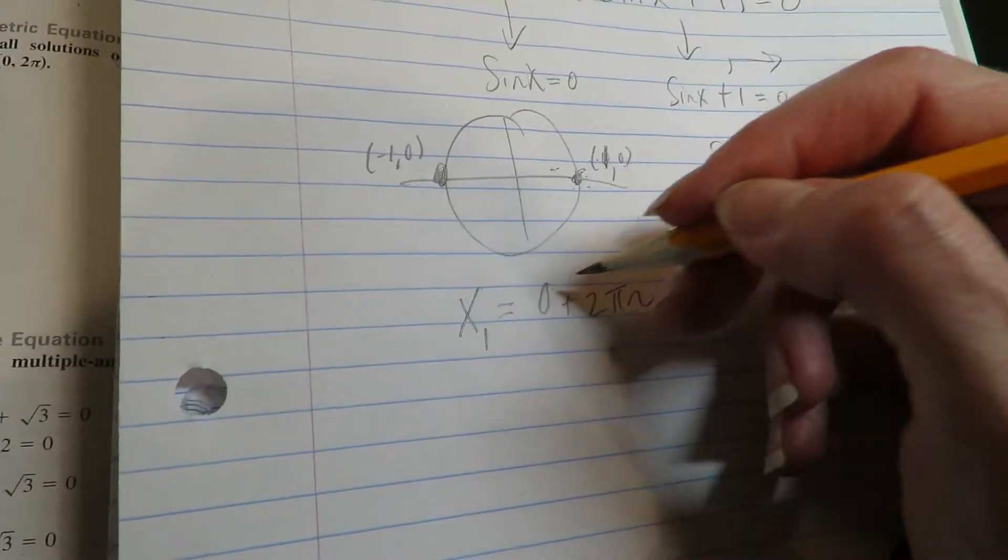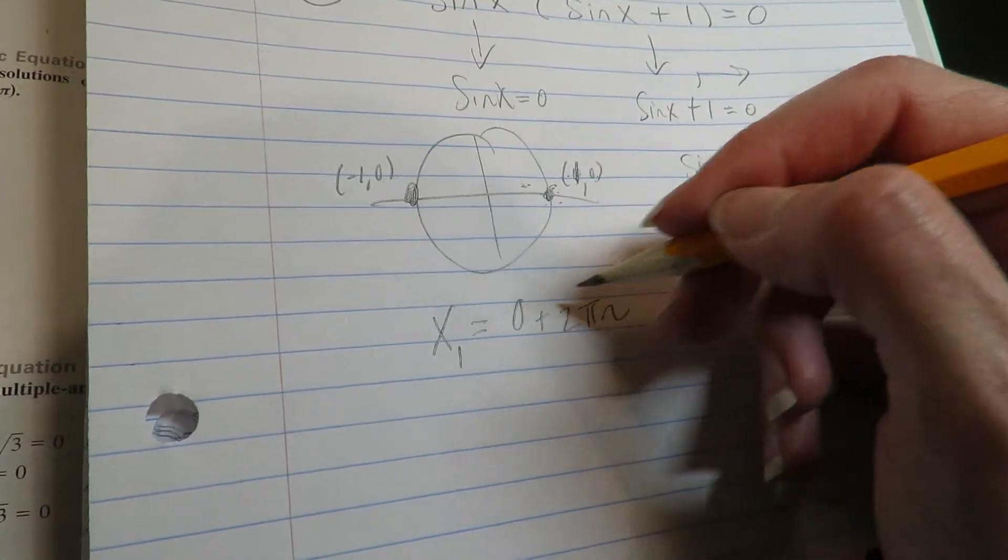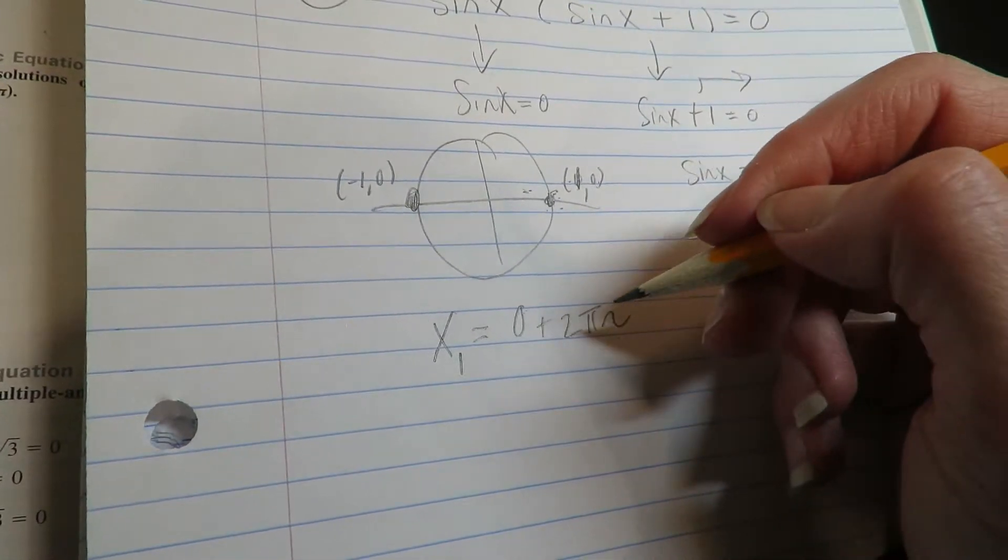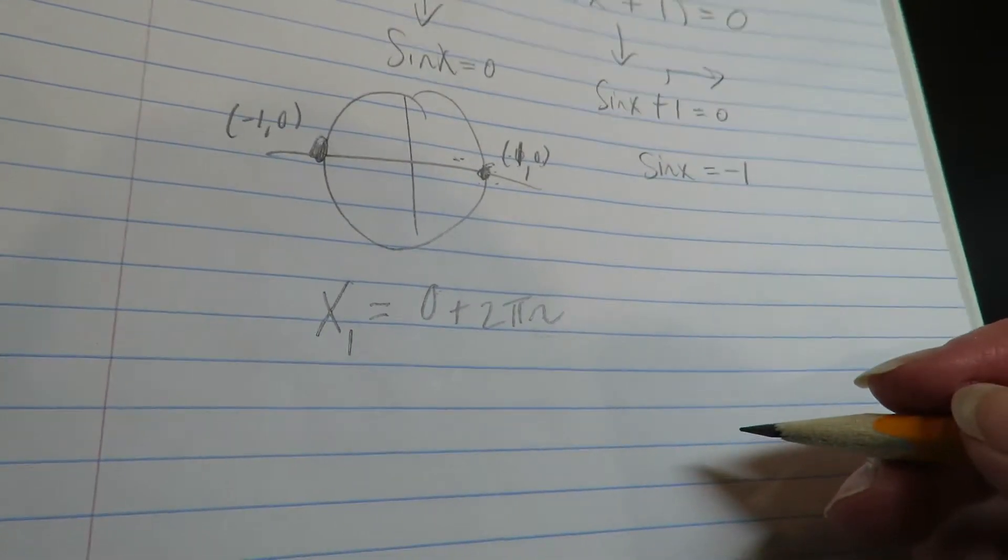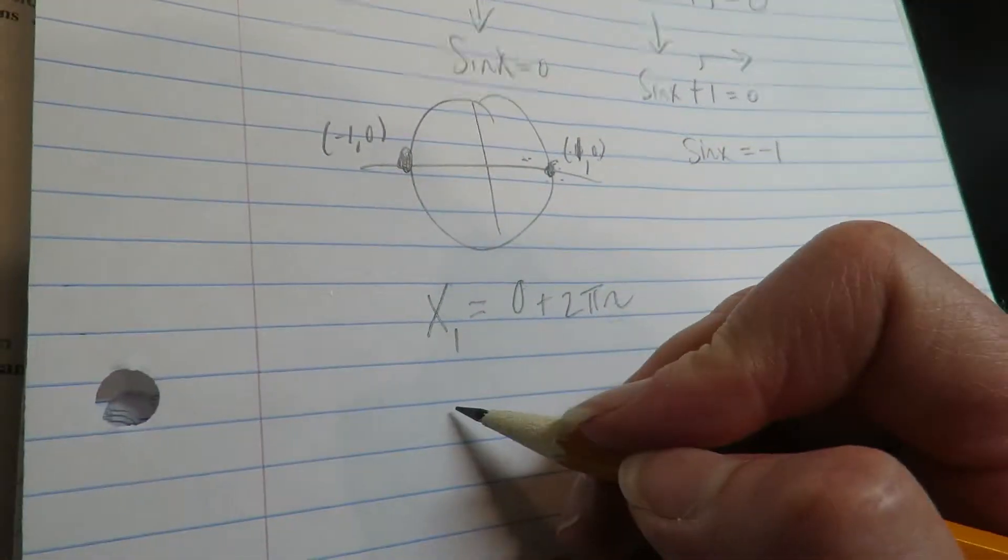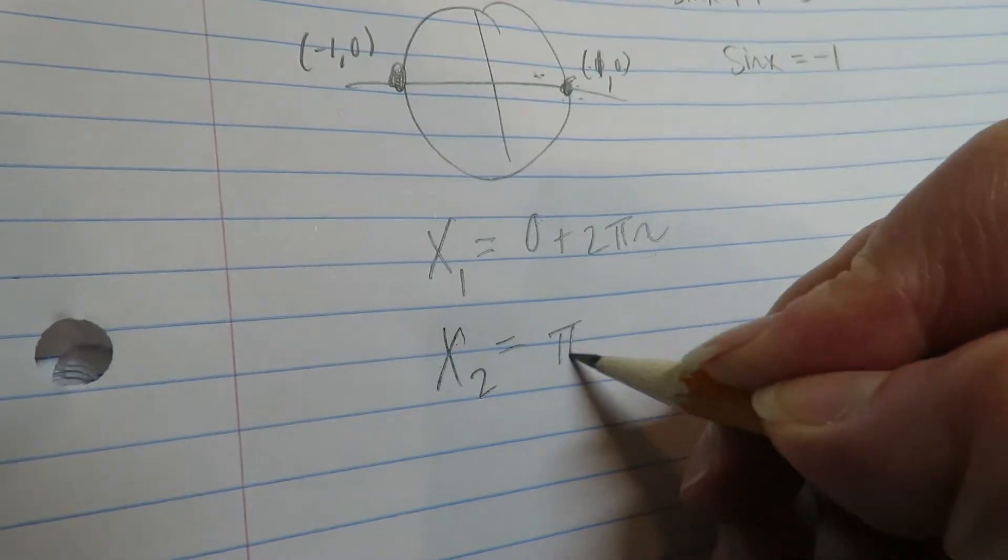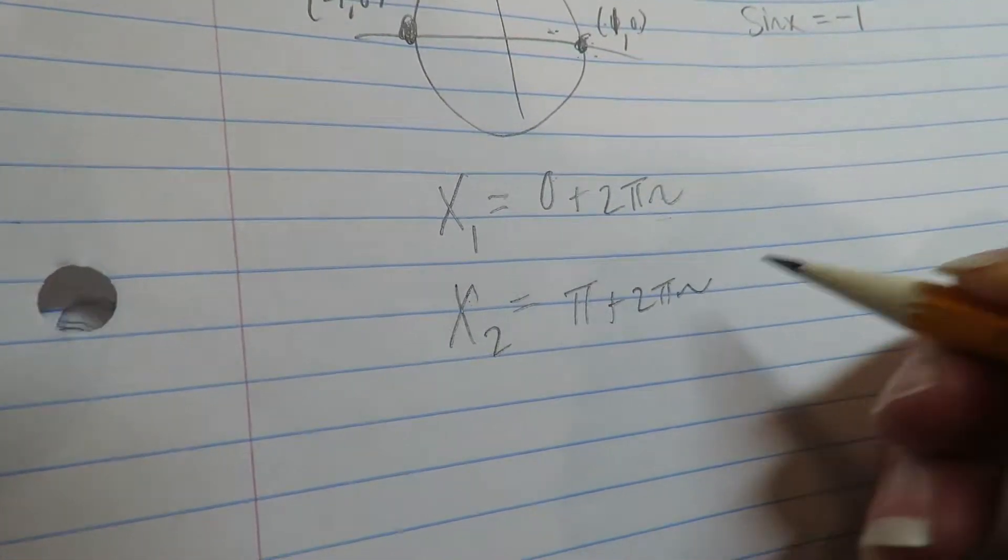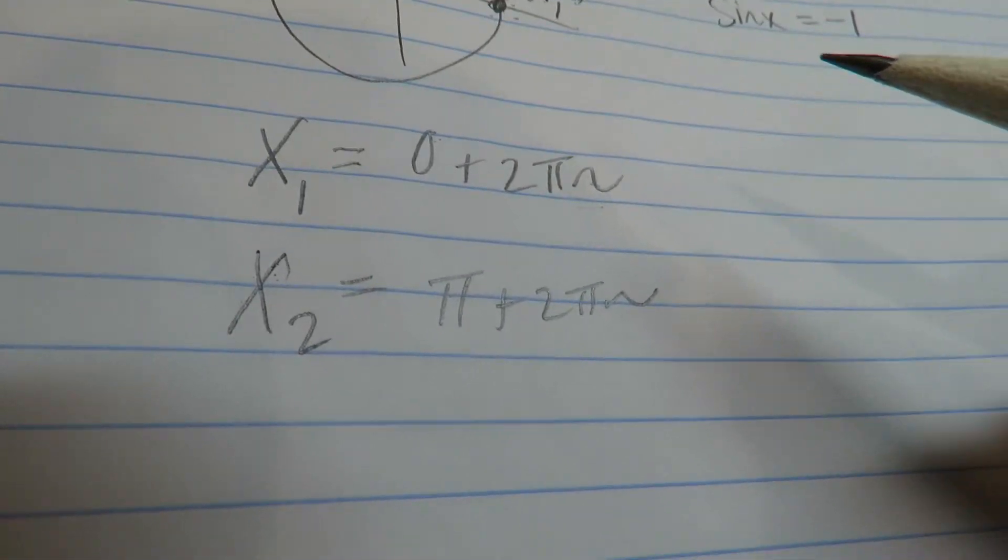So that's why you're writing this, where n is an integer. Let n be zero, the answer's zero. Let n be one, the answer's two pi. Let n be two, the answer's four pi. You're writing this so it can generate all the answers. The second answer over here is at pi. And then you have to add two pi n because they want all the answers, not just on one interval.